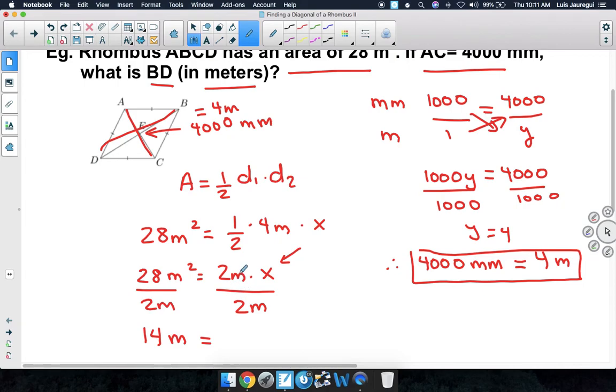And this is equal to 2M divided by 2M, which is 1 times X, simply X. So we can say the other diagonal is equal to 14 meters in length.